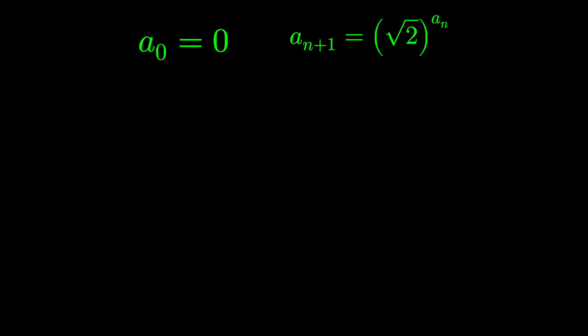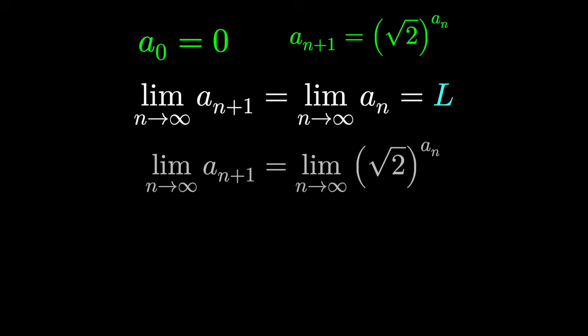What have we said here? This sequence is bounded above, it's also monotonically increasing, it must converge. If it converges to a limit L, then the limit of a sub n is the same as the limit of a sub n plus 1. We can treat the recursive relationship like an equation applying the limit as n goes to infinity on both sides. And we would have L equals root 2 to the L. Of course, our answer of 2 satisfies this equation.